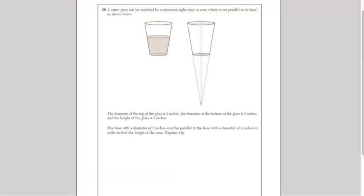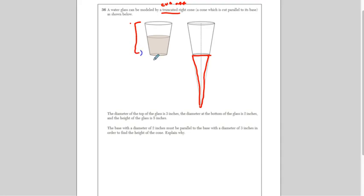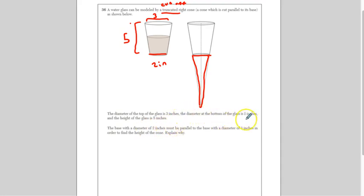A water glass can be modeled by a truncated right cone — a cone which is cut parallel to the base as shown. Truncated means cut off, so you're taking this cone and cutting off part of it to get the water glass. The diameter at the top of the glass is three inches, the diameter at the bottom is two inches, and the height of the glass is five inches. The base of diameter two inches must be parallel with the base of diameter three inches in order to find the height of the cone.